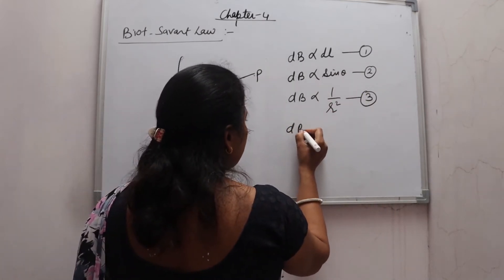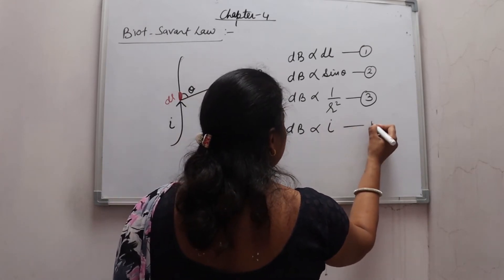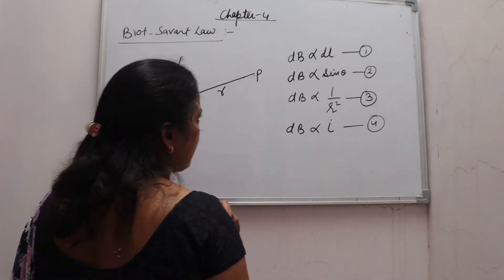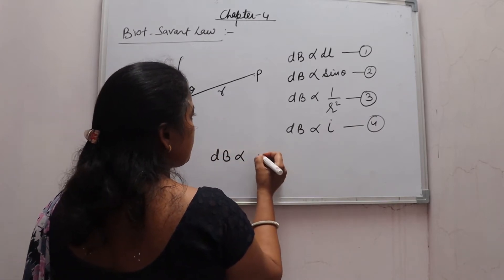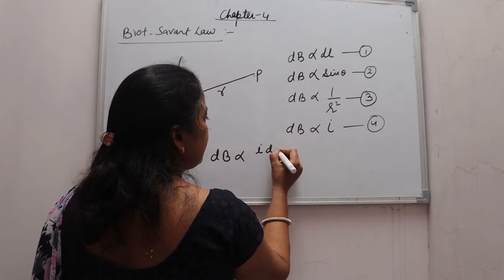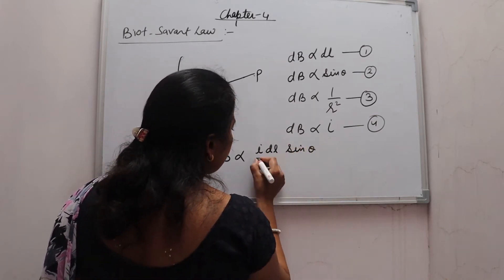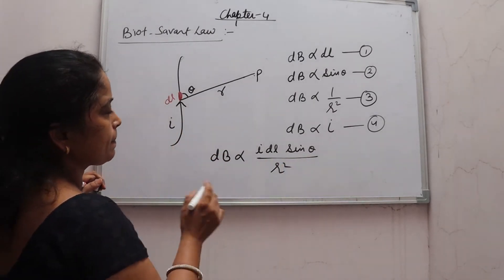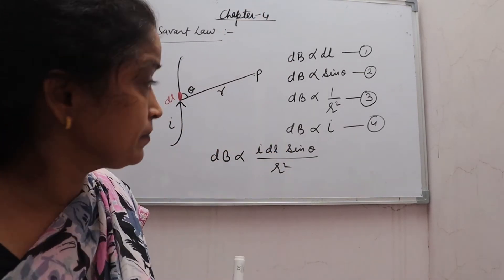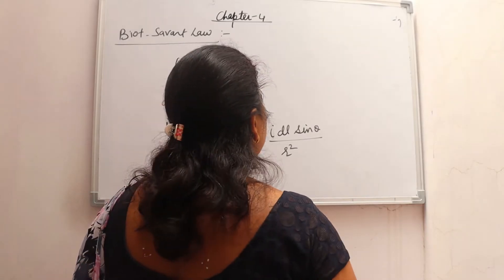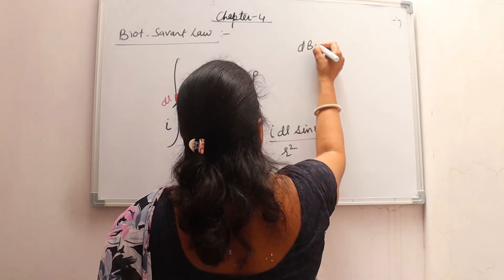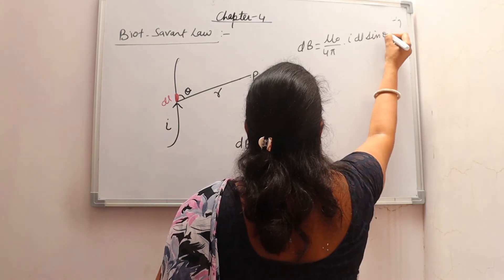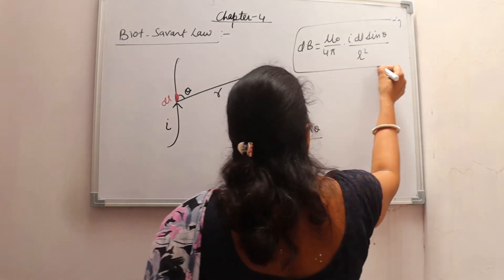And DB is proportional to I. We know that if we increase the current, the magnetic field increases — we will study this from Oersted's experiment. If we combine all these, then we can write DB proportional to I·DL·sinθ upon R square.